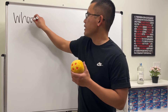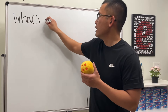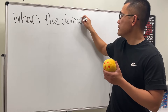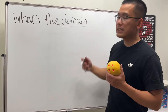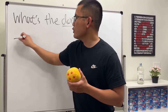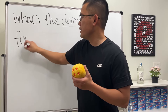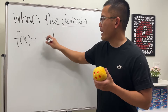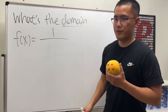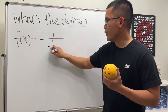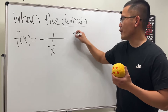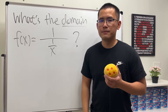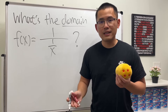This is a domain question — let me just write down the question for you. We would like to know what's the domain. Keep in mind that domain is a set of all the possible x values. The function here is going to be a little bit weird, don't worry though — one over x. So let me know, what do you think the domain of this is? That's it for the video.